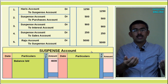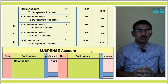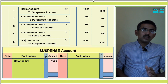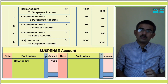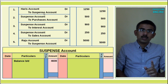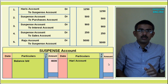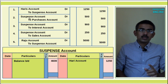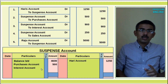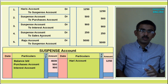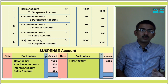The general entries using the suspense account are as follows: the first entry — credit Rs.1,250 to suspense account; the second entry — debit Rs.500 to suspense account; the third entry — debit Rs.900 to suspense account; the fourth entry — debit, sales account Rs.250, credit side.